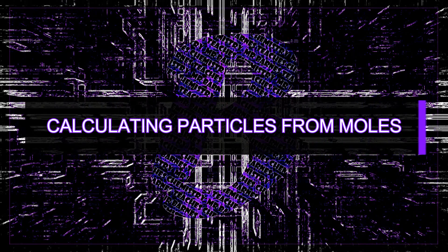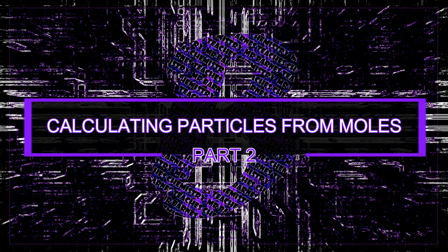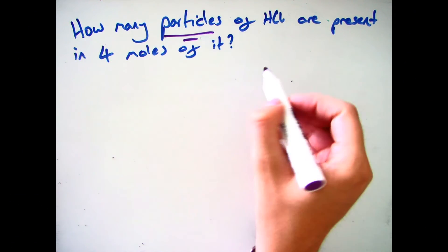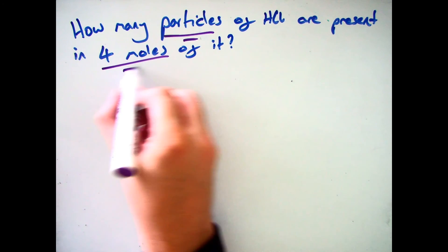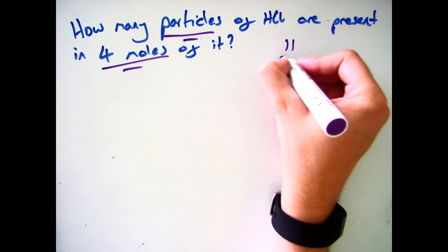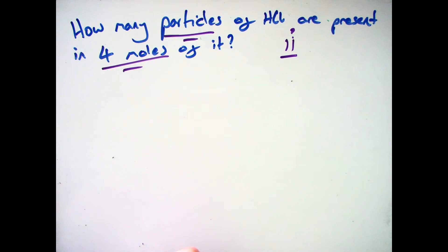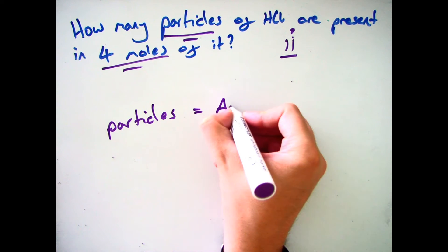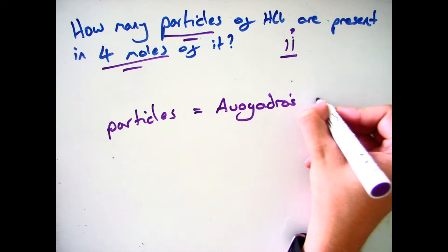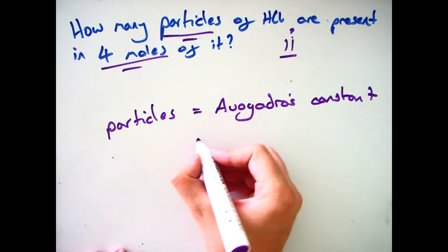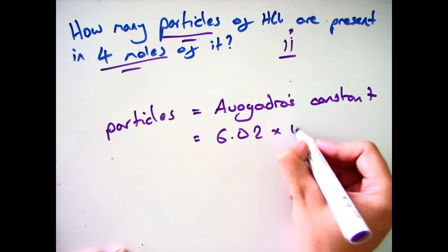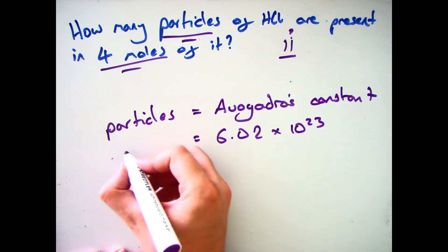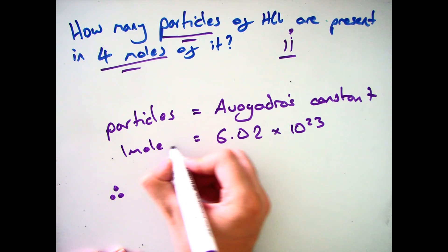The second part of this video looks at the number of particles present when you're given the number of moles. For example, if you're asked 'how many particles of hydrochloric acid are present in 4 moles?', the key is Avogadro's constant. When we talk about 1 mole, we talk about having 6.02 × 10²³ particles.